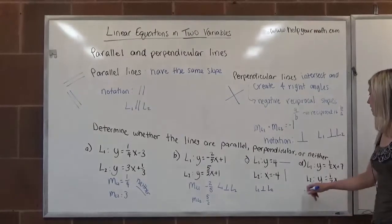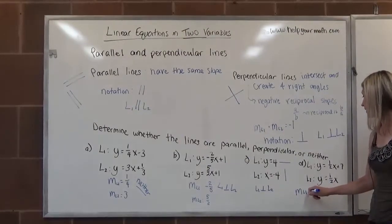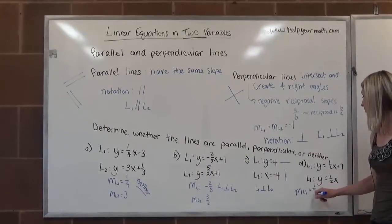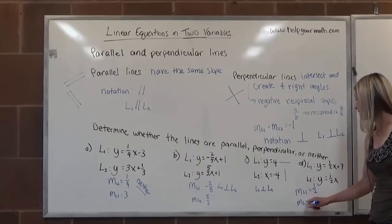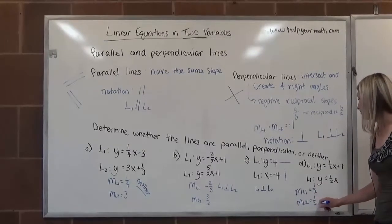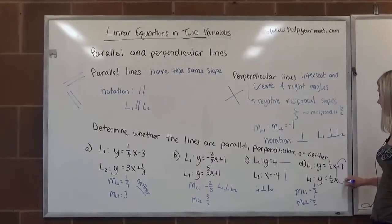Last letter D, the slope of line one is a half. The slope of line two is a half.